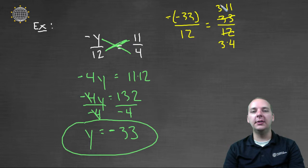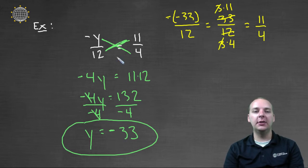And sure enough, when the threes cancel, when this fraction reduces, you get the ratio eleven to four. So we've found the y that satisfies the equation, and we've solved the proportion.